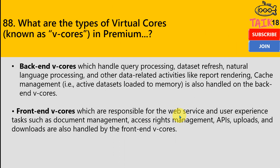So what are the types of virtual cores, known as V-cores, in premium? When it comes to premium licenses we have P1, P2, P3, P4, and P5, and they contain V-cores. In premium Gen 2, we have two types of cores: backend cores and frontend cores. The backend core handles query processing, dataset refresh, natural language processing like Q&A, and other data-related activities like report rendering and cache management. Active dataset load to memory is also handled on the backend V-core.